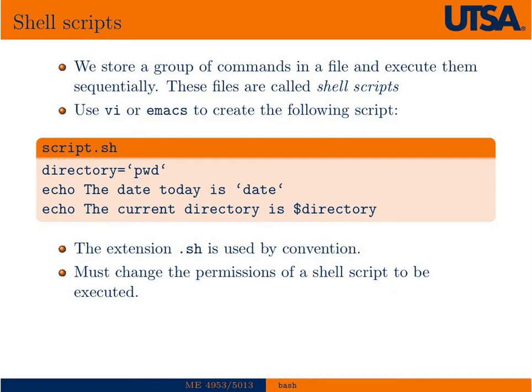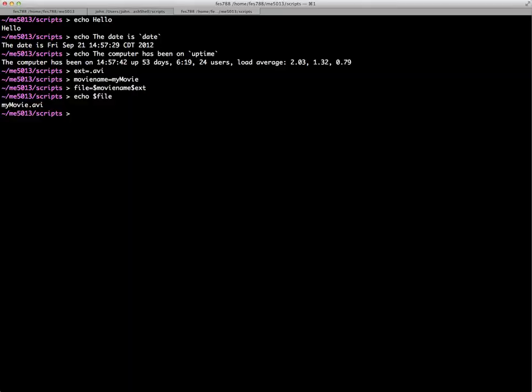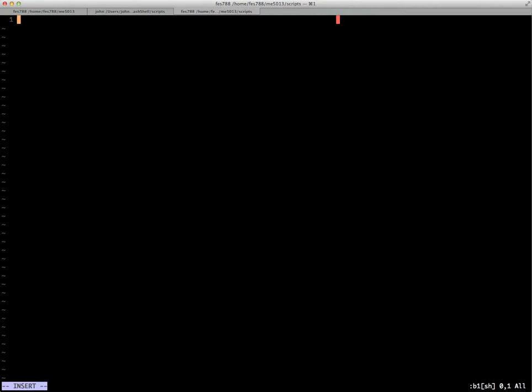We typically use a .sh extension just by convention, but you can call it anything. It doesn't even have to have a file extension at all. Of course, since we're making this script into something that we need to execute, we have to change the permissions of it to be an executable file. So I think if we just, since we now have an editor available to us, what I'll go ahead and do is just open up a new file. I'll call it myscript.sh.